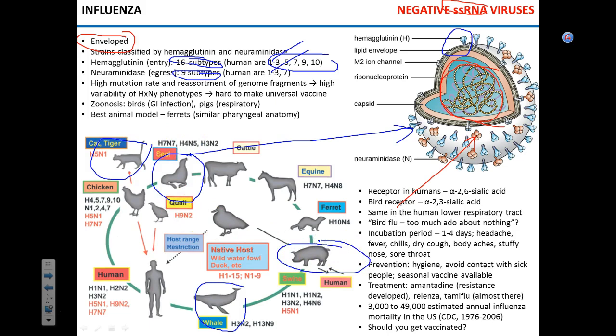How do pigs acquire influenza? They get it from waterfowl. The route of zoonotic transmission looks like this: waterfowl transmit influenza to pigs. Importantly, influenza in birds is a gastrointestinal — not respiratory — disease. Ducks and geese basically poop all over pig enclosures; pigs inhale it and get a respiratory infection. Then people get in contact with pigs, the virus gets aerosolized, people inhale it, and that is zoonotic transmission of what we call swine flu.